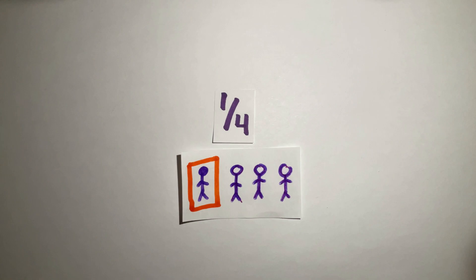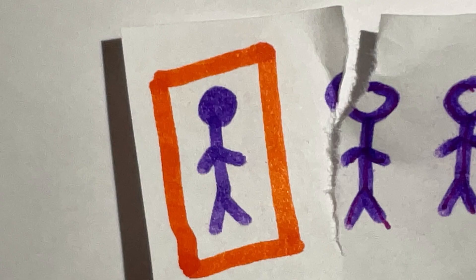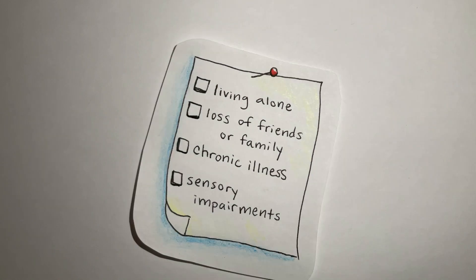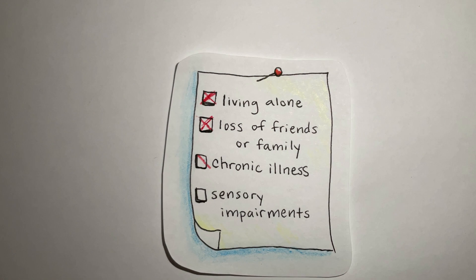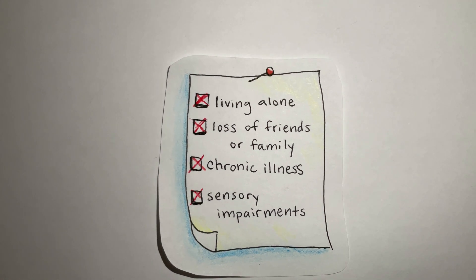One in four adults ages 65 and older is socially isolated. Risk factors that can lead to social isolation or loneliness include living alone, the loss of family or friends, chronic illness, and sensory impairments.